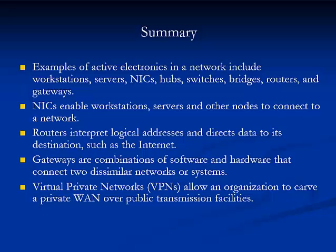In summary, examples of active electronics in a network include workstations, servers, NICs, hubs, switches, bridges, routers, and gateways. NICs enable workstations, servers, and other nodes to connect to a network. Routers interpret logical addresses and direct data packages to their destination, such as the internet. Gateways are combinations of software and hardware that connect dissimilar networks or systems. Virtual private networks, or VPNs, allow an organization to carve out a private WAN over a public transmission facility.